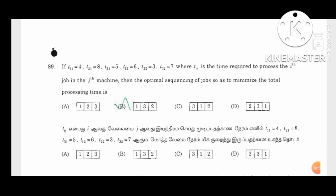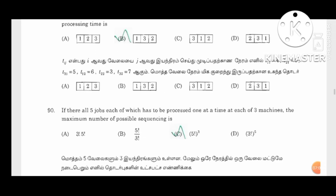We choose the minimum value to proceed with the problem. If there are five jobs, each processed one at a time, at each of three machines, the maximum number of possible sequences is five to the power three. We can use permutations and combinations: five to the power three.